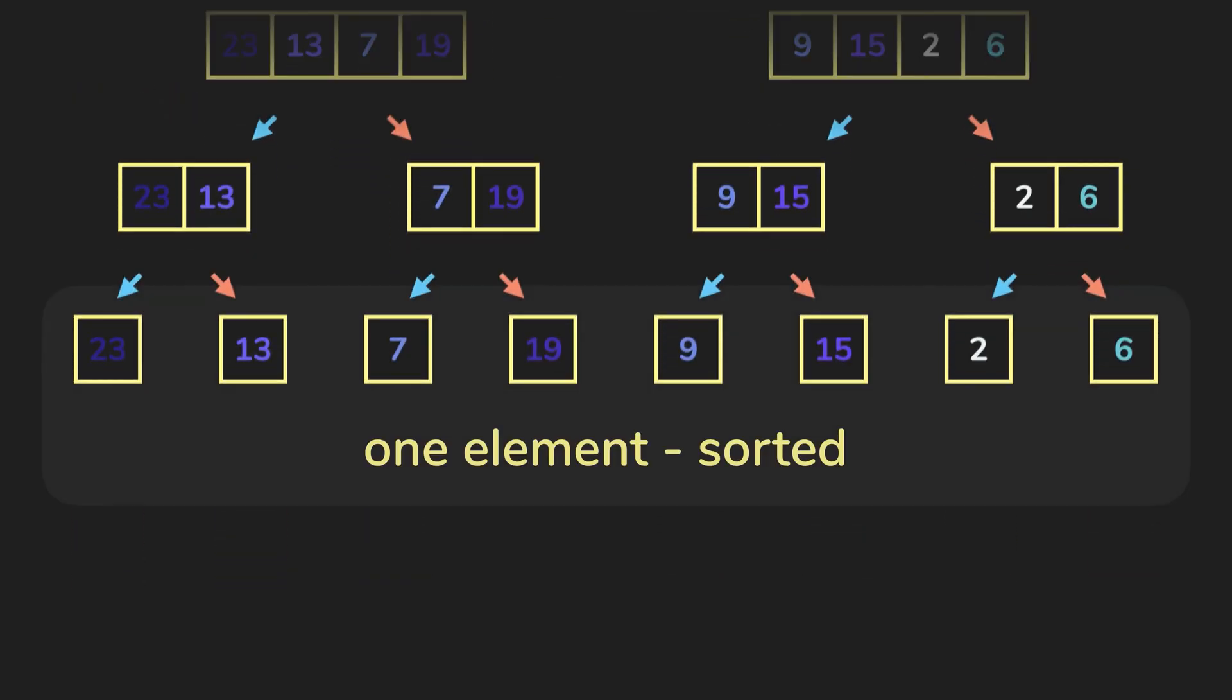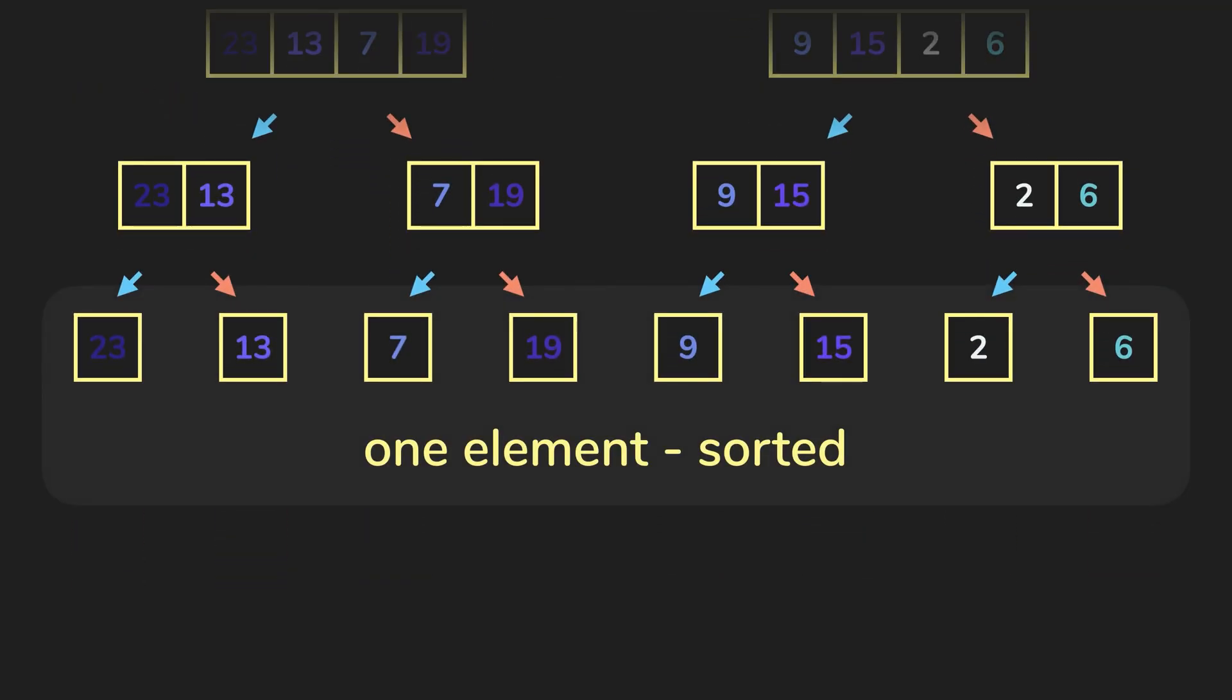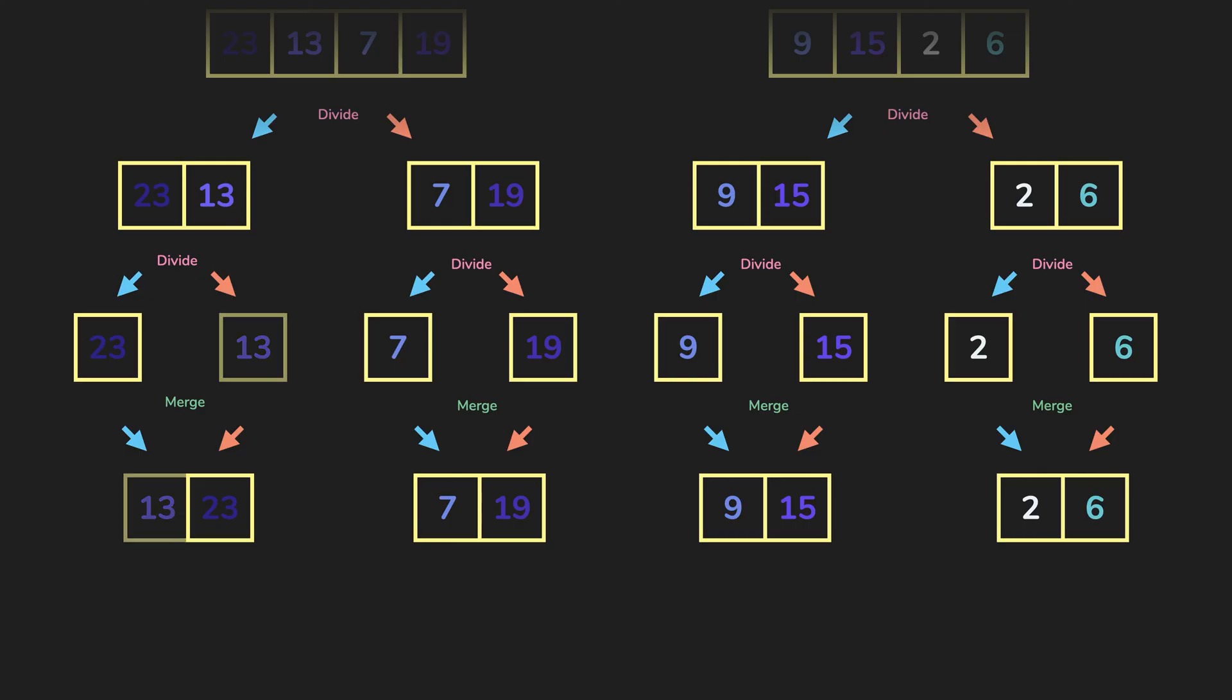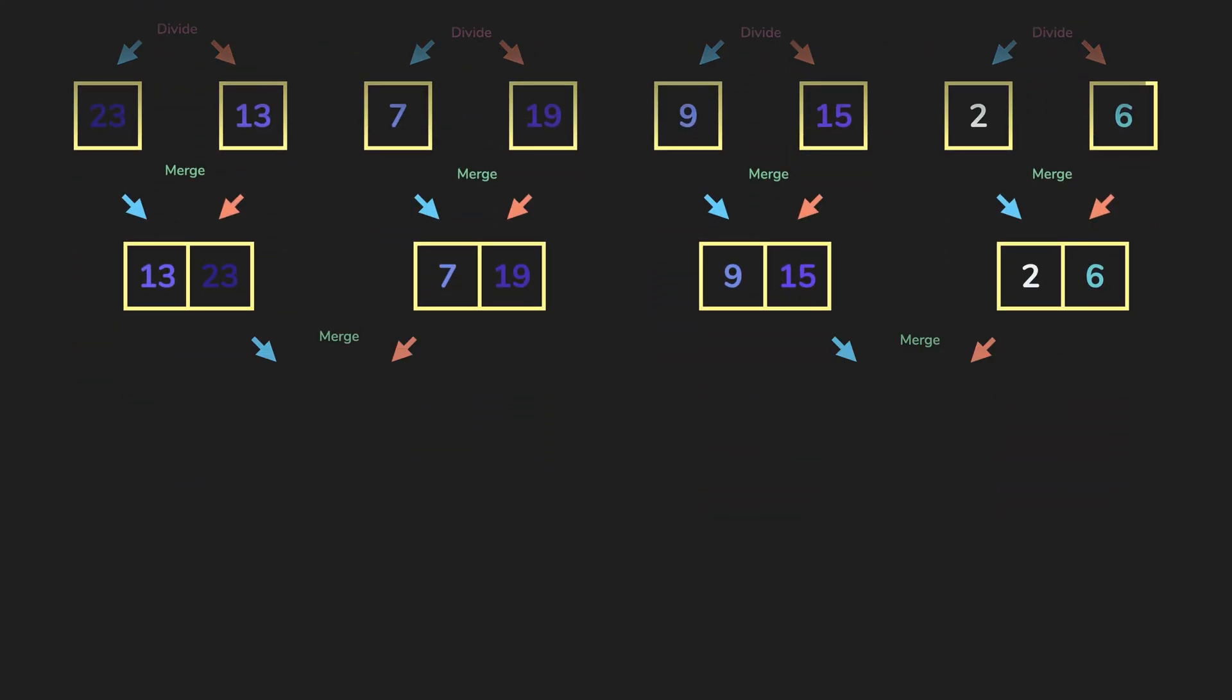When there's one element, we don't even need to merge since the array is already sorted with one element. These single element arrays are returned from the merge sort call where the parent function merges them. You can see that the returned arrays are sorted.